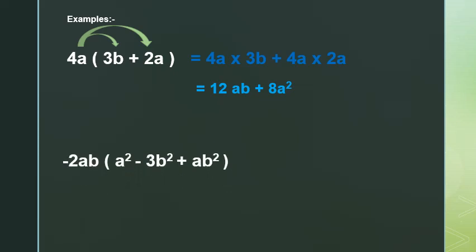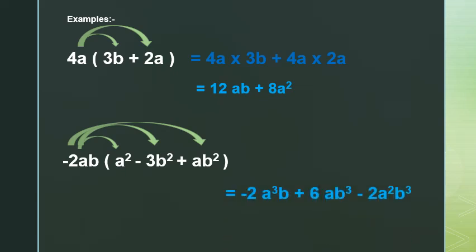Next example: negative 2ab, in brackets, by (a squared minus 3b squared plus ab squared). We distribute: negative 2ab by a squared, then negative 2ab by negative 3b squared, and negative 2ab by ab squared. Negative 2 by 1 equals negative 2, and a to the power 1 by a squared gives a to the power 3, then write b.